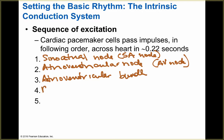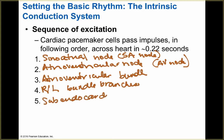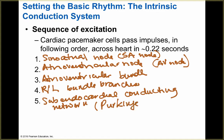From the AV bundle, it branches off into both the right and left bundle branches. Then it goes to the subendocardial conducting network, also known as the Purkinje fibers. This is a sequence of excitation starting in the SA node, allowing the impulse to travel from the base all the way through to the apex.